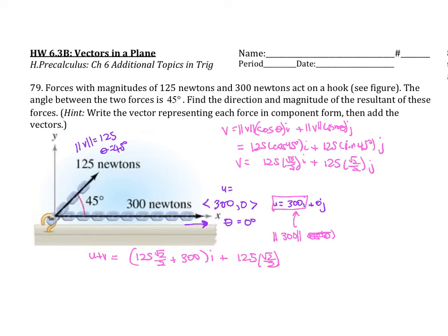So if we simplify that with just numbers, we know that this becomes, not 300, it becomes a total of 388.39 i plus 88.39 j. This is the j here.